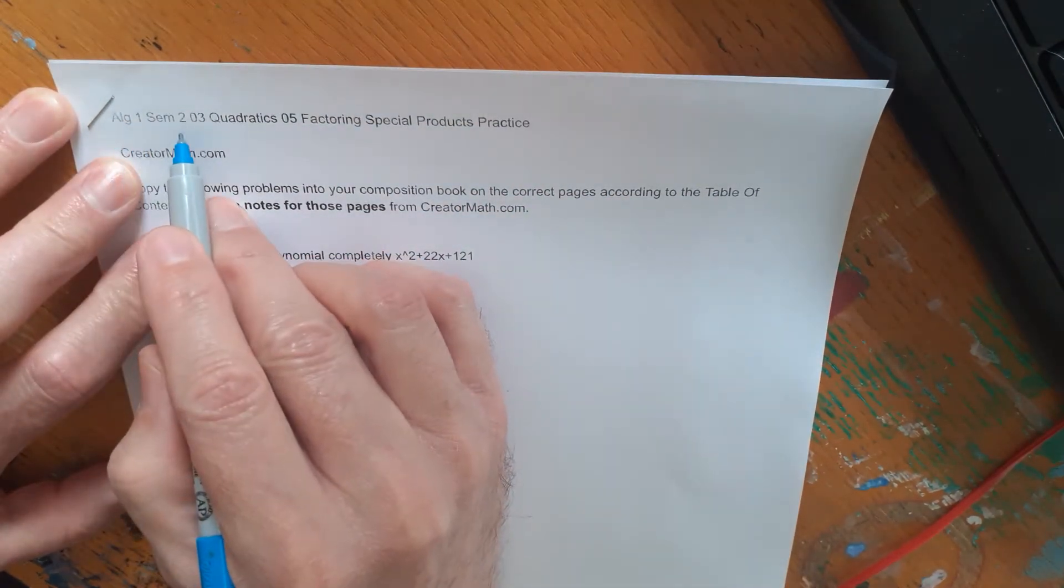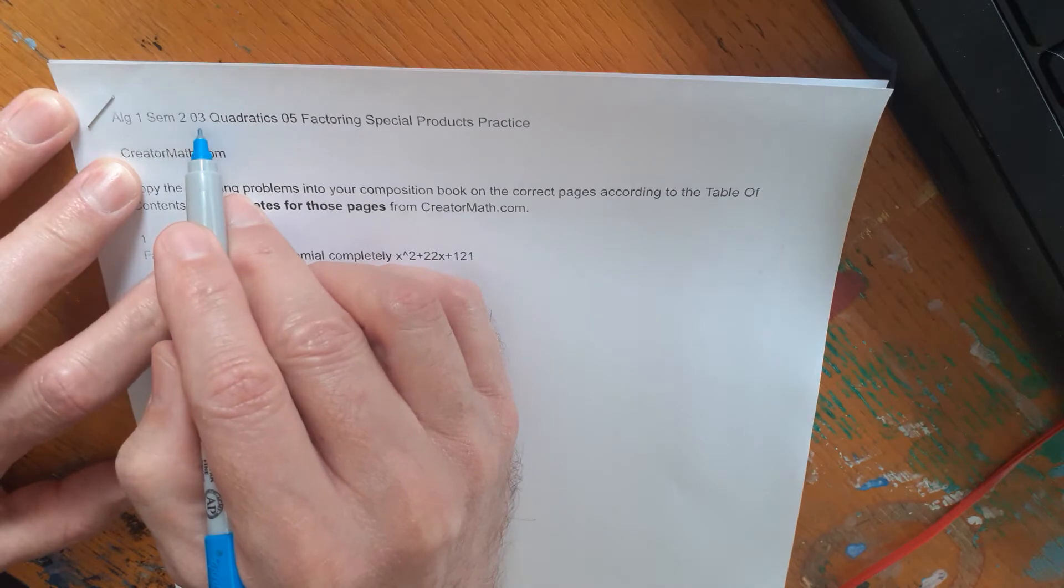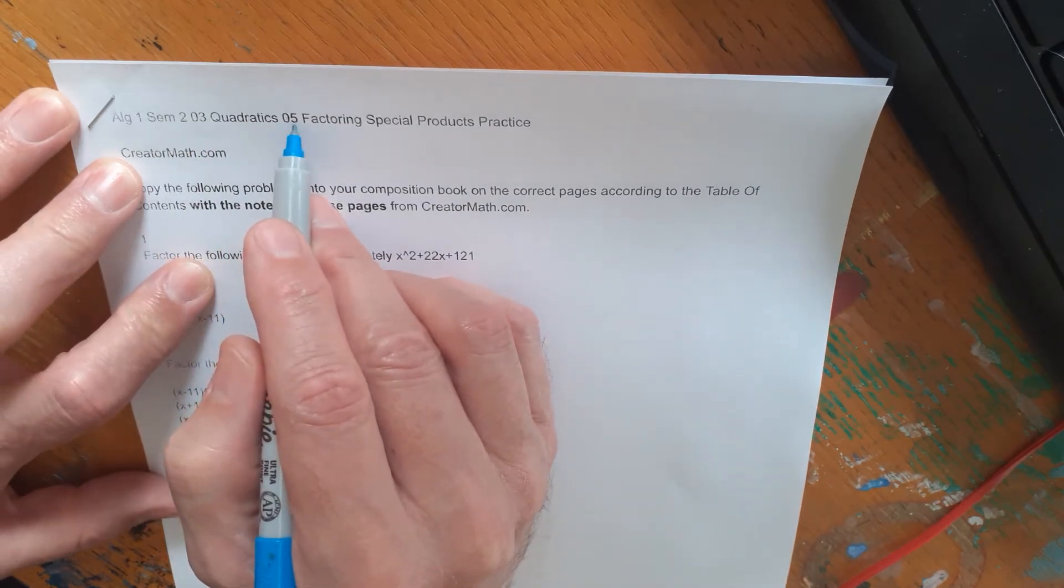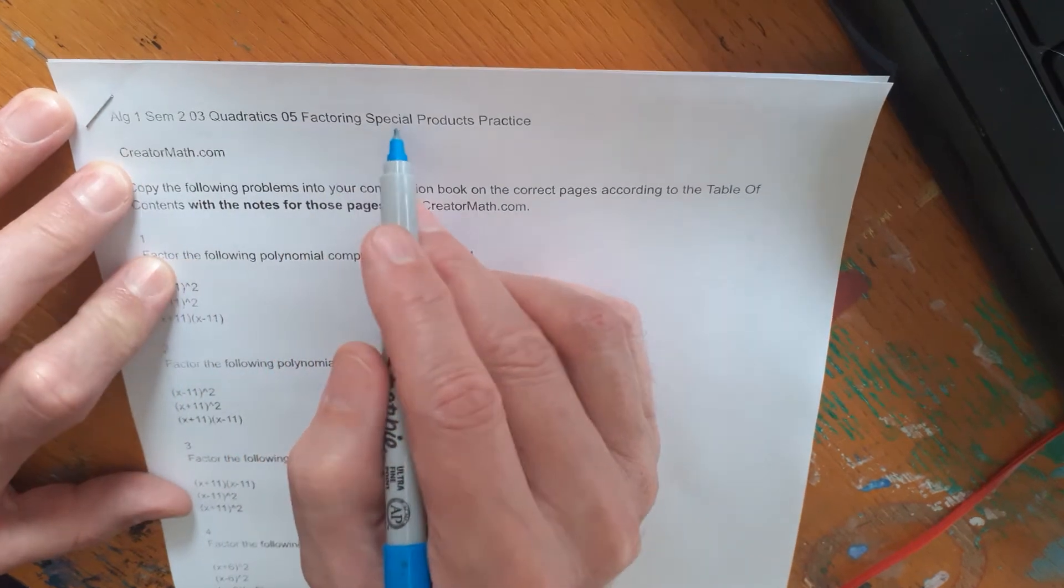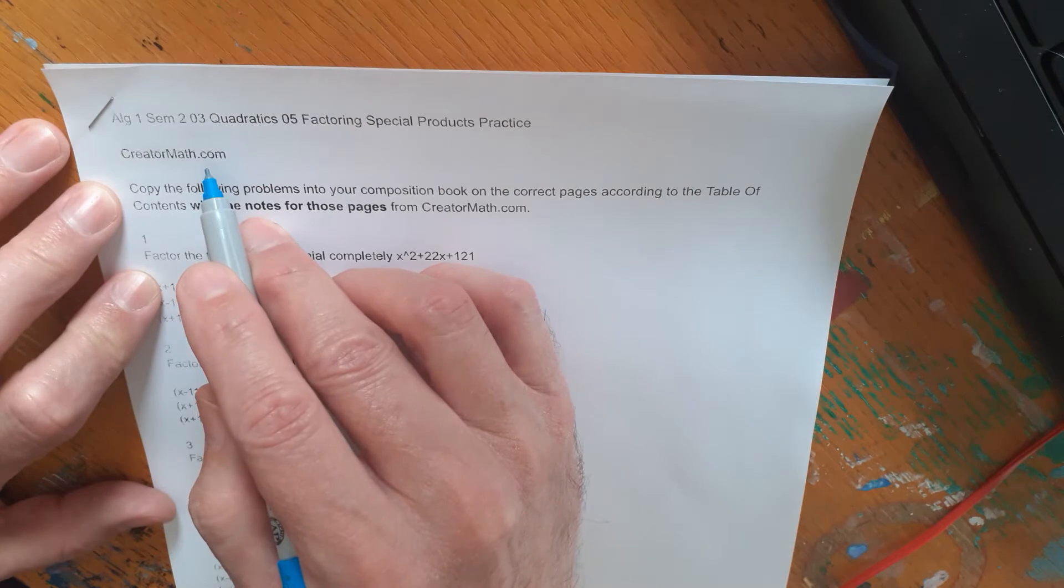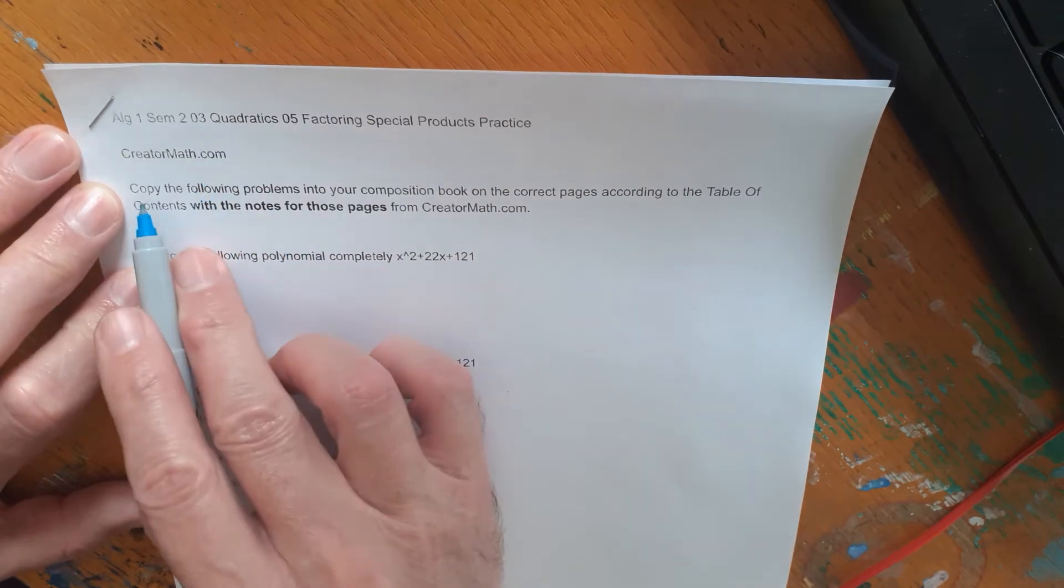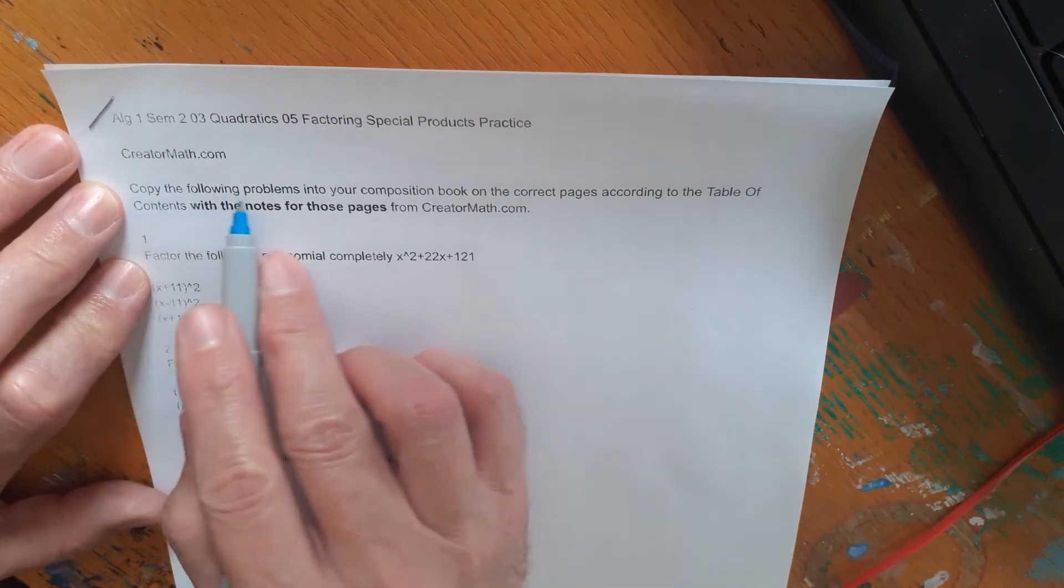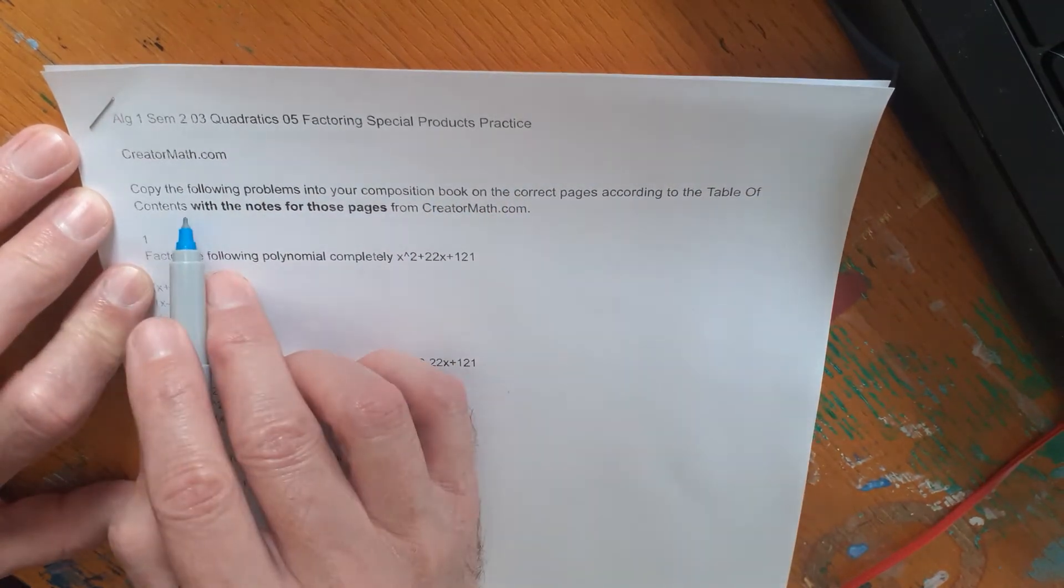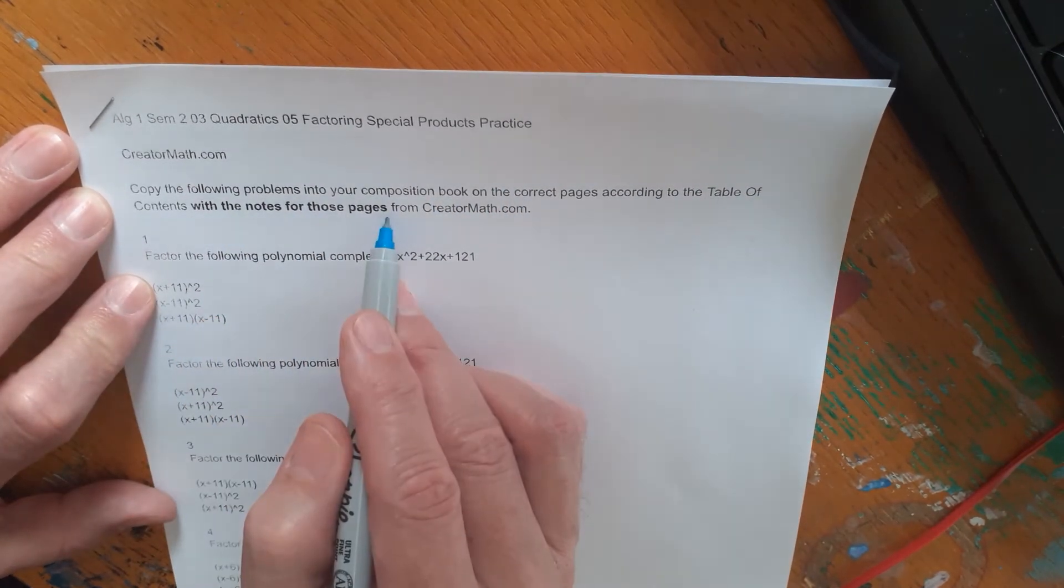This is Algebra 1, Semester 2, the third unit called Quadratics, and the fifth lesson in that unit. It's Factoring Special Products Practice on CreatorMath.com under the Algebra tab. The instructions are to copy the following problems into your composition book on the correct pages according to the Table of Contents with the notes for those pages.